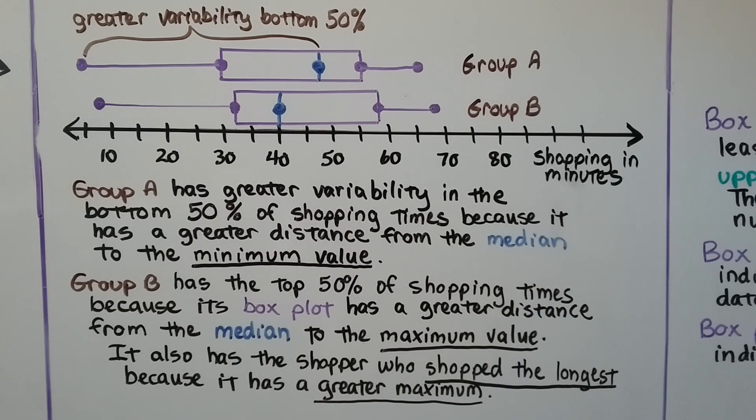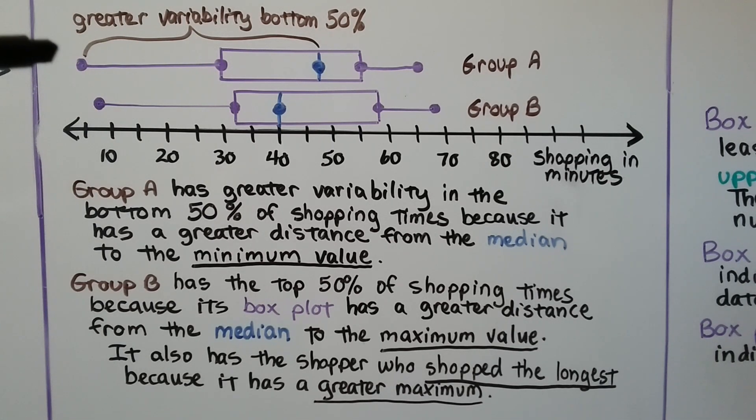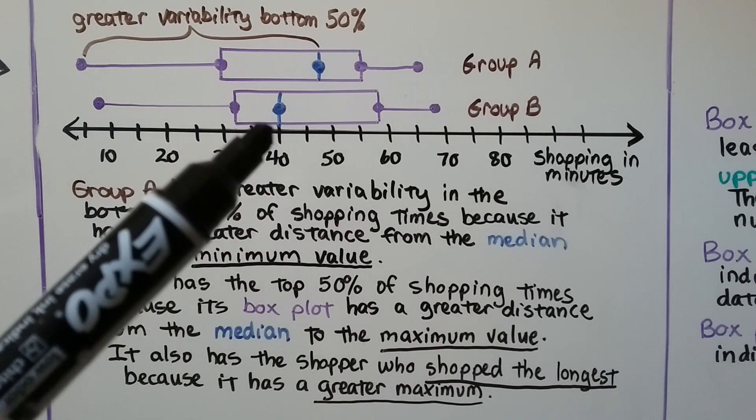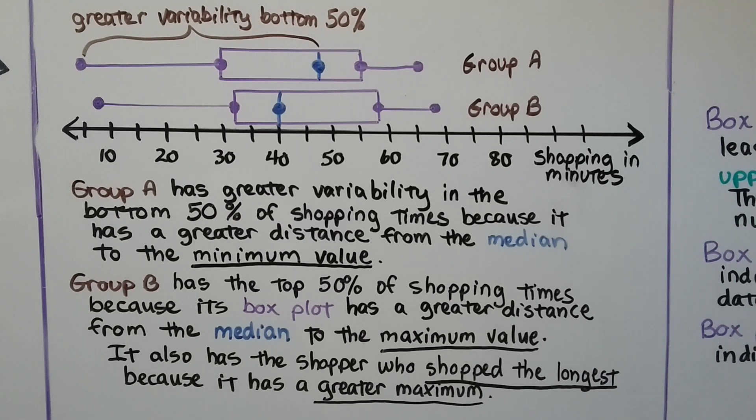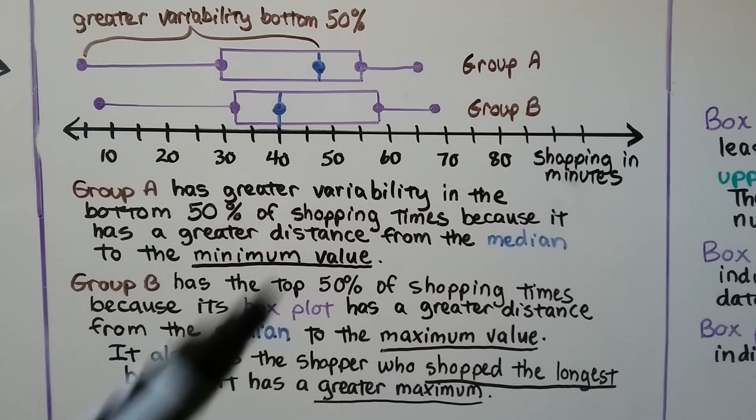Using the same box plots, group A has greater variability in the bottom 50% of shopping times because it has a greater distance from the median to the minimum value. And group B has greater variability in the top 50% of shopping times because its box plot has a greater distance from the median to the maximum value. It also has a shopper who shopped the longest because it has the greater maximum.